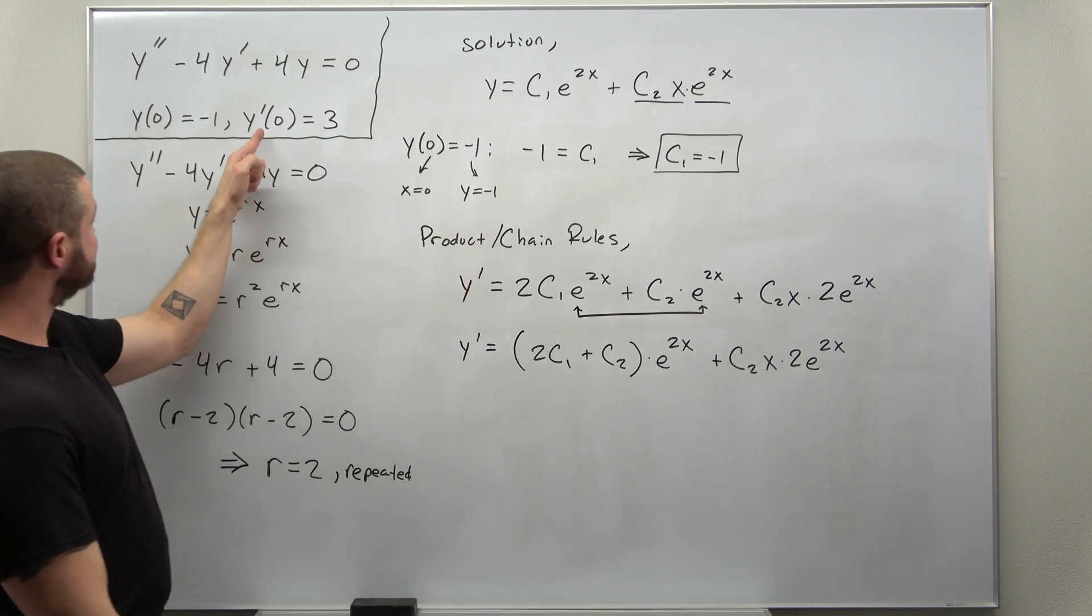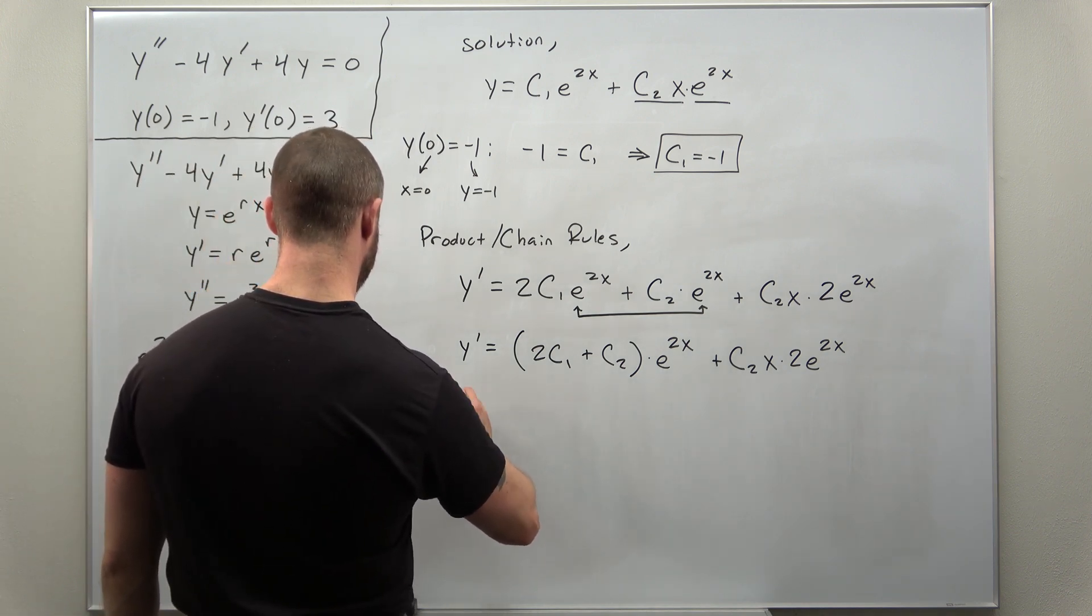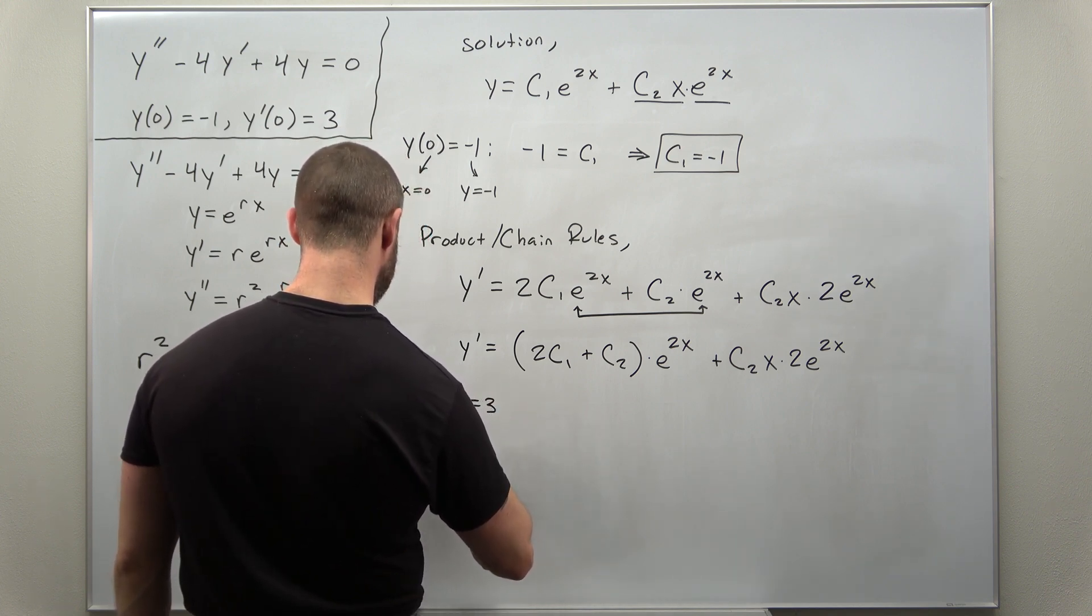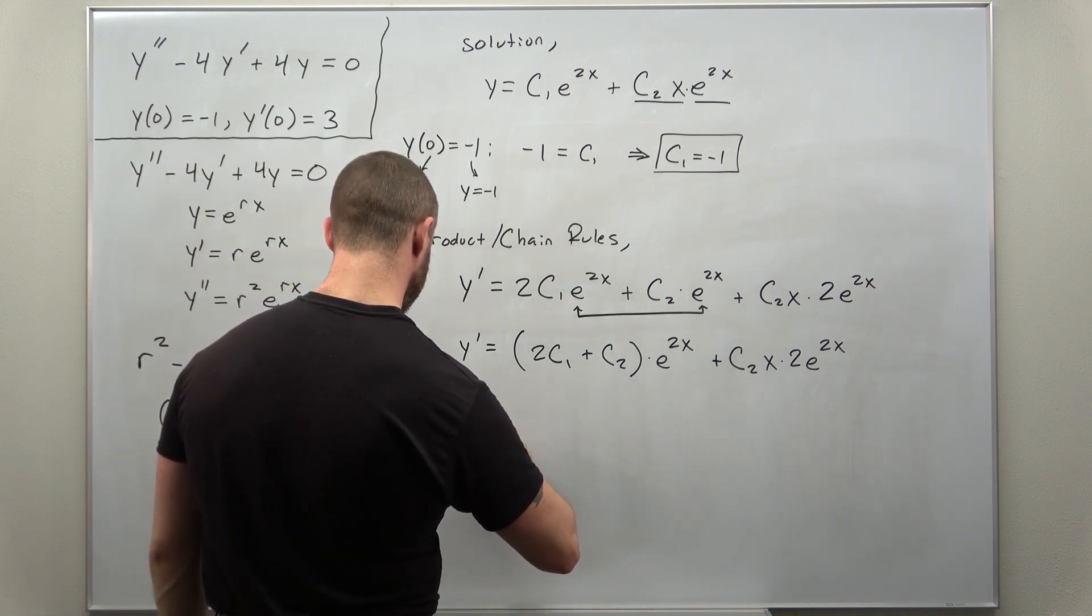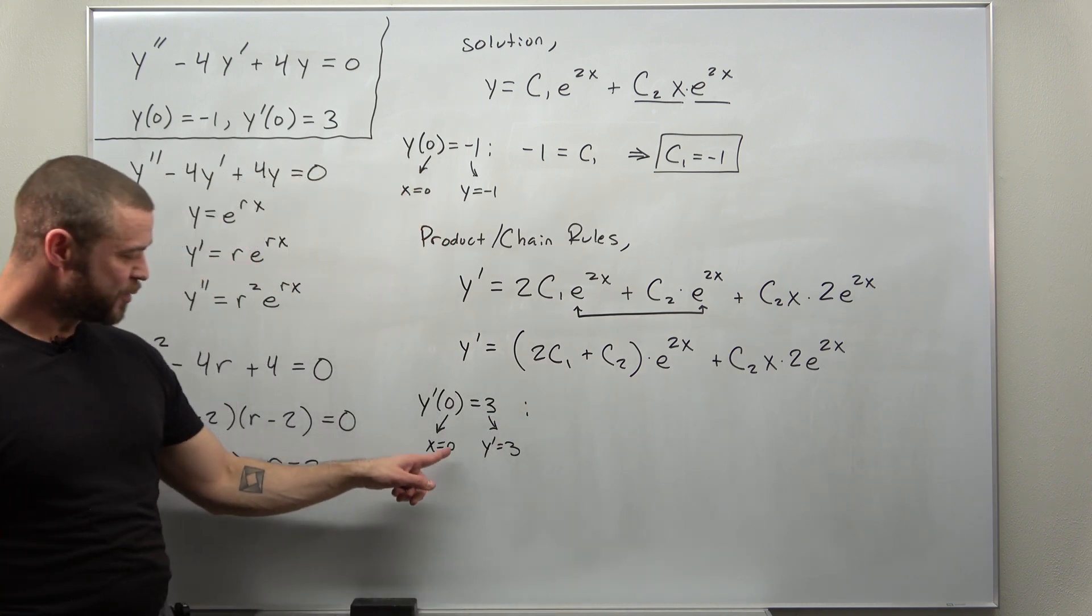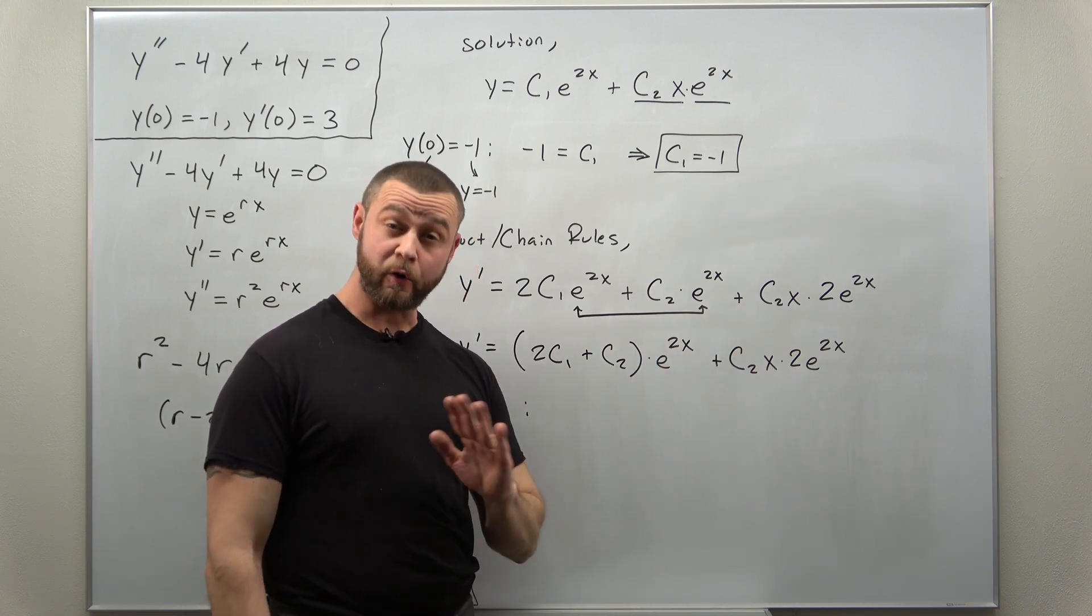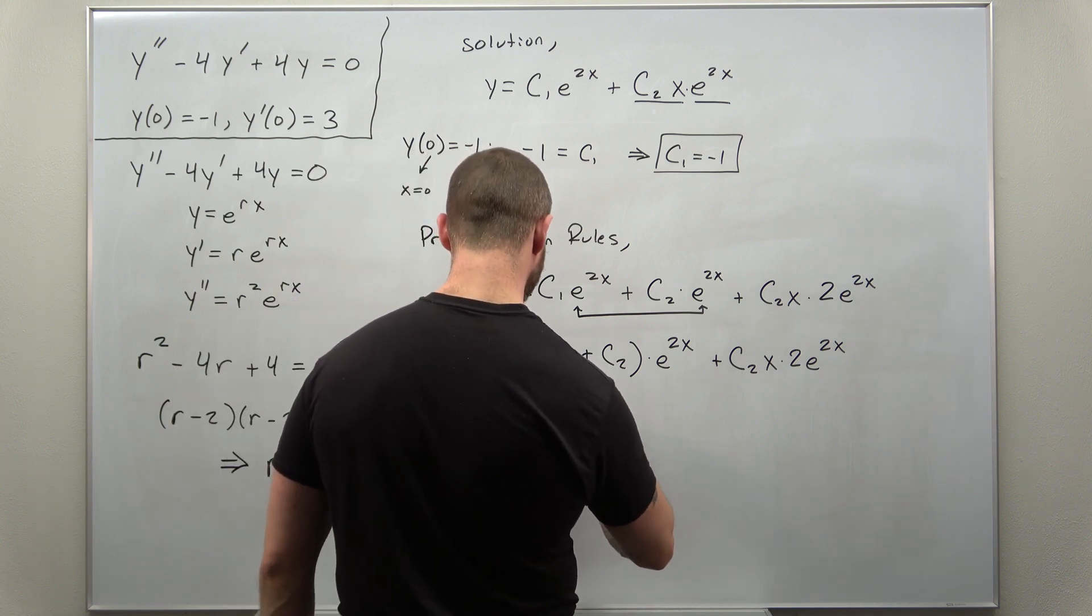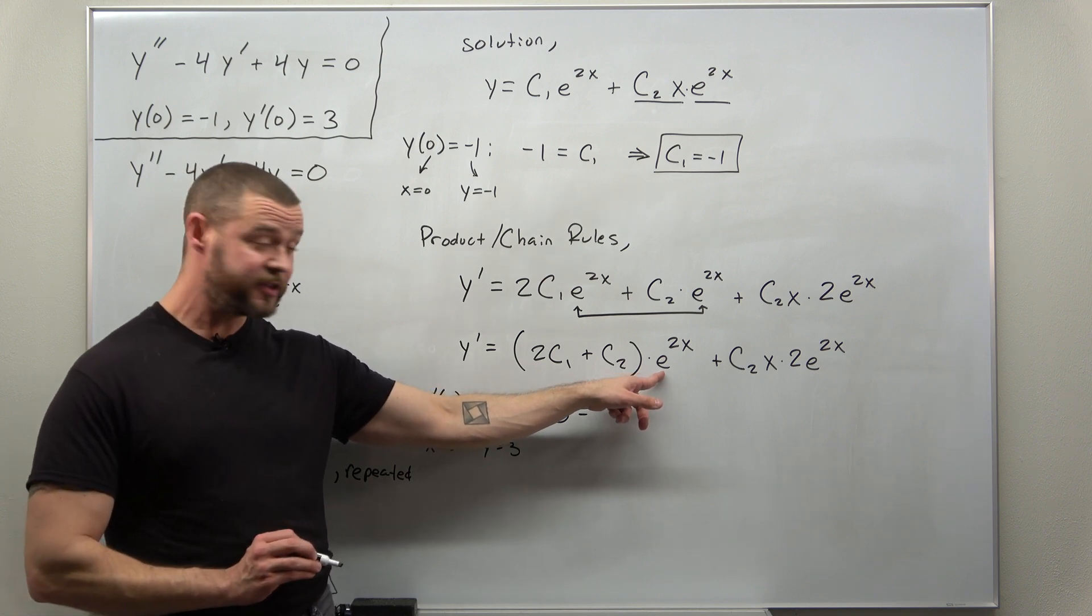So now if we use our derivative initial condition, y prime of 0 equals 3. We're plugging in x is 0 and then y prime as 3, and with x is 0 again this whole term right here goes away. So if we plug in y prime on the left is 3, and the exponential term here we again get an e to the 0.